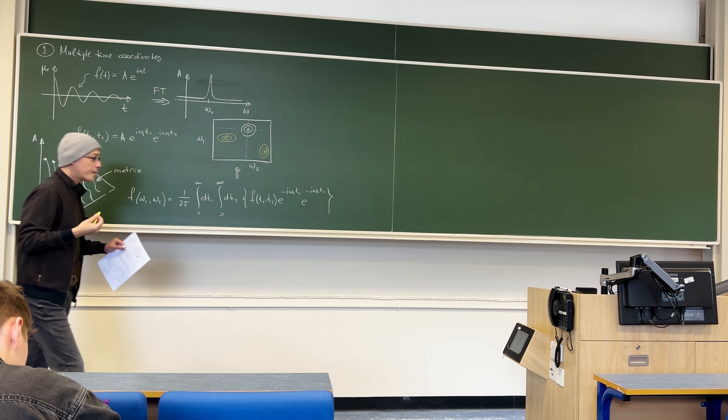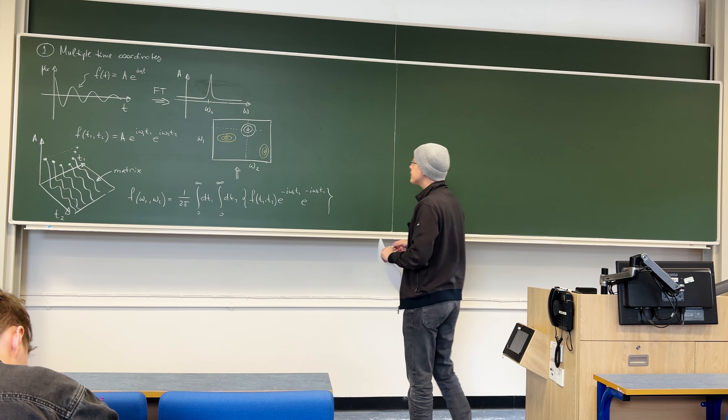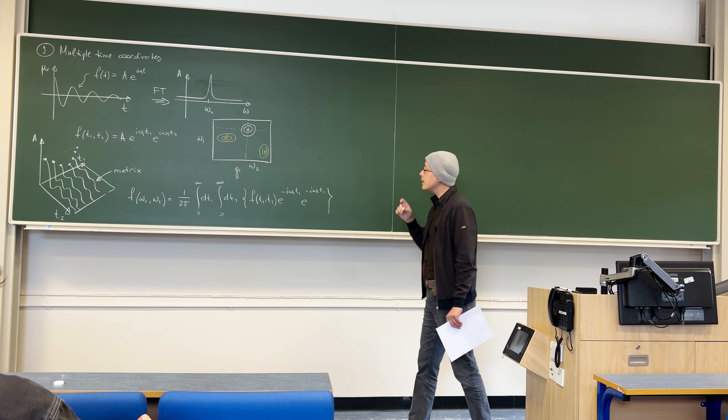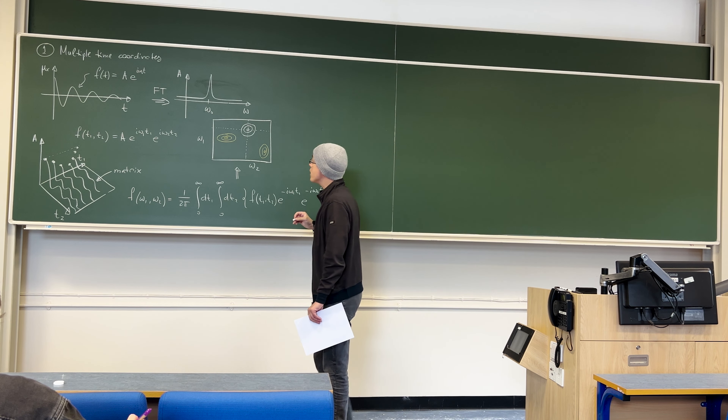In a 2D spectrum there are two extra advantages. First, peaks are better separated in two dimensions than in one. Second, if we manage to link two frequencies — for example two spins with a J coupling — we allow one spin to evolve for a while, move magnetization to the next spin through the J coupling, and allow it to evolve further. This only leads to observable magnetization if the two spins are J-coupled, so these cross peaks highlight which nuclei are nearby — either topologically through J couplings or in spatial proximity through the nuclear Overhauser effect.